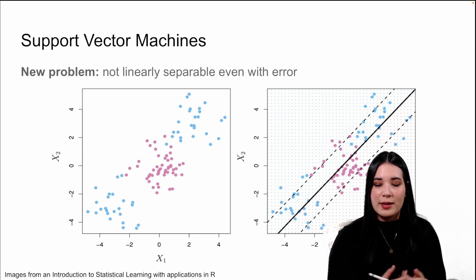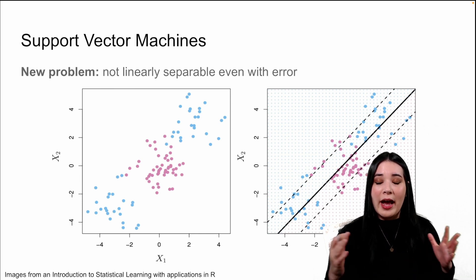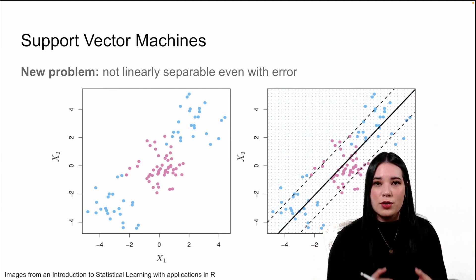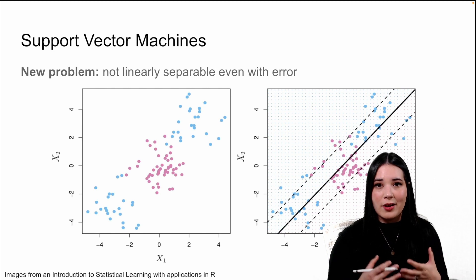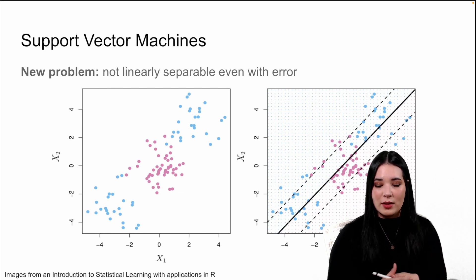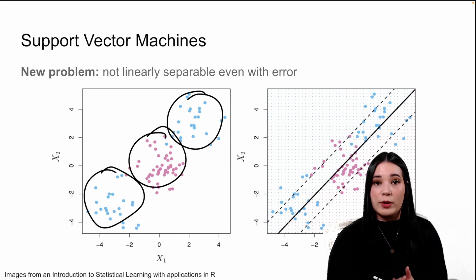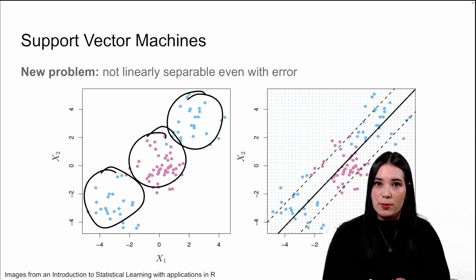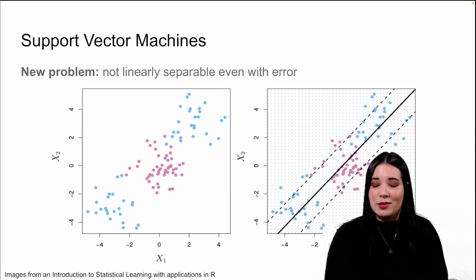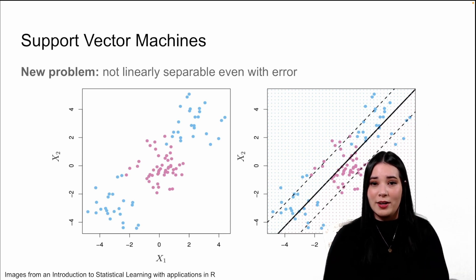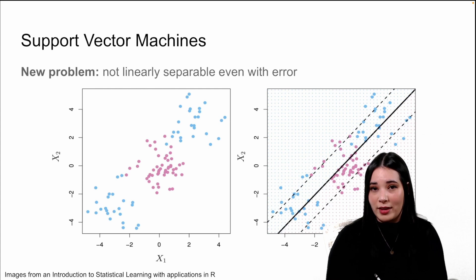For example, with this data, no matter how big your slack variables are, there's no linear hyperplane that will be able to classify our blue data points in these groups from our pink data points in this group. On the right hand side, you can see an example of a support vector classifier trying to do this and pretty much failing.